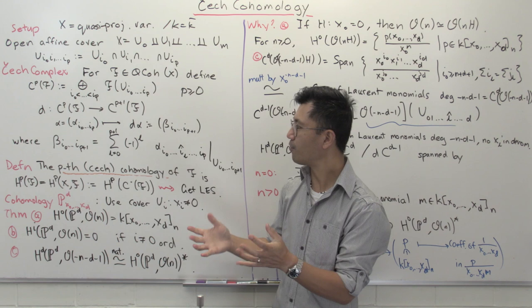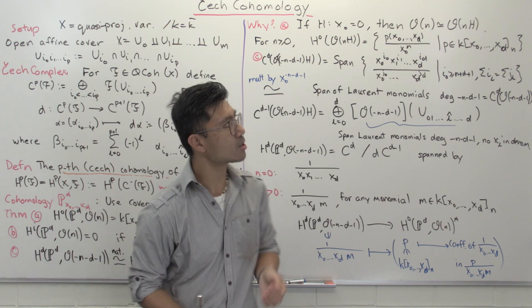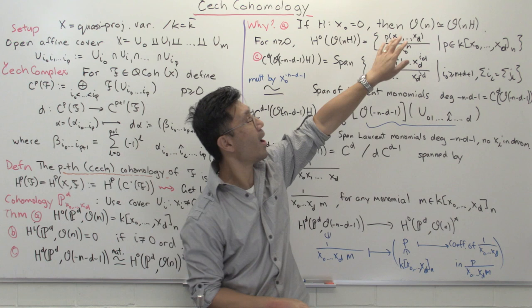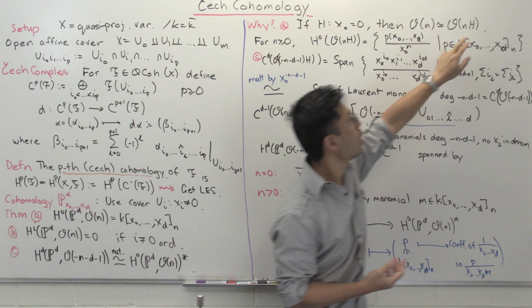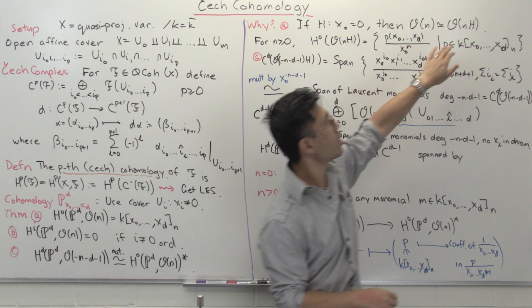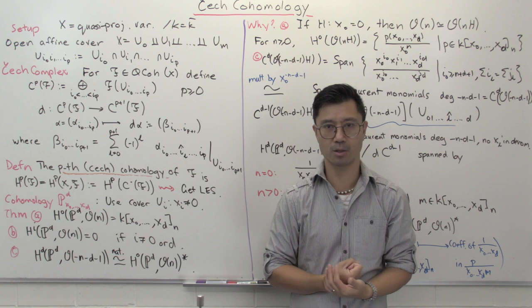Let me sketch some of the computations. To compute O(n), think of it — up to isomorphism — as O(nH), where H is the hyperplane where x₀ = 0. This is the sheaf of all rational functions with a pole of order at most n at H and no other poles. Let's focus on the case n ≥ 0. When n is negative, the sections are rational functions with no poles but a zero of order at least |n| along H, so only the constant 0 survives.